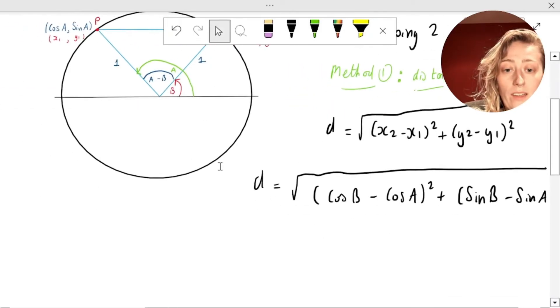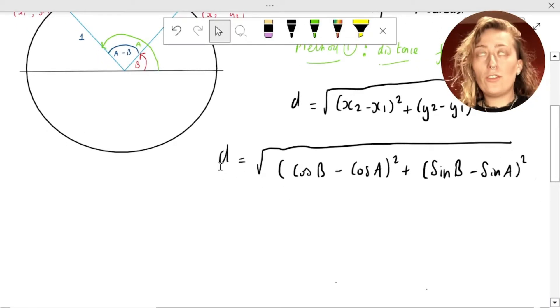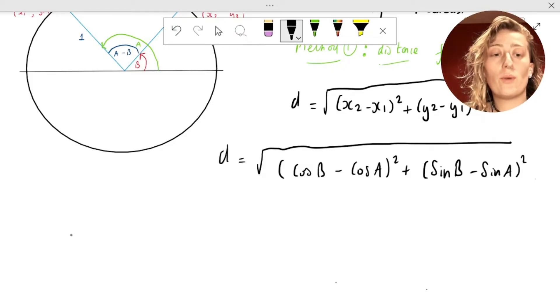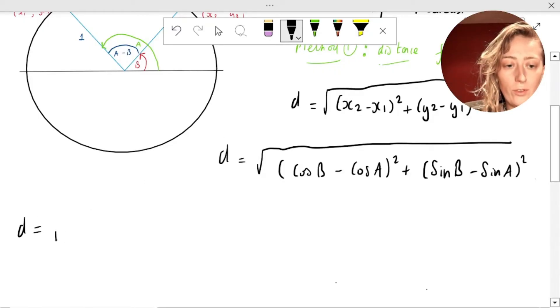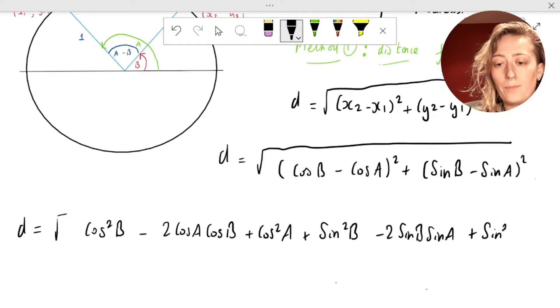Let's multiply these brackets. If you want to do this quickly, we can use the method, which is that when you've got two terms in a square bracket, then all you need to do is you square the first plus two times first times the last plus square the last. So we've got D is equal to the square root of cos squared B minus 2 cos A cos B plus cos squared A plus sine squared B minus 2 sine B sine A plus sine squared A. And we're going to square root this whole thing.